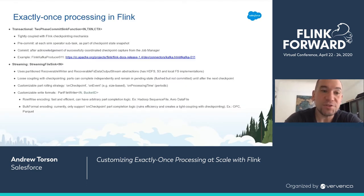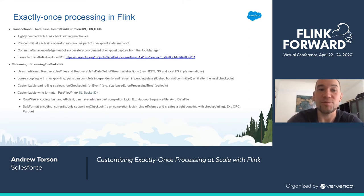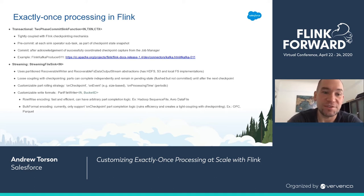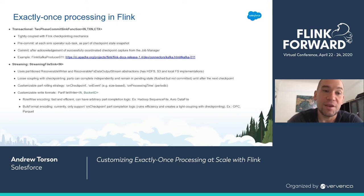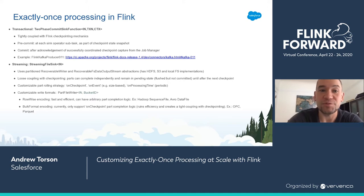There are actually two different directions to achieve that. If you want transactional support, then Flink offers what's called a two-phase commit sink function. The most well-known example is the Flink Kafka producer for Kafka versions 0.11 or higher. It relies on Flink's checkpointing mechanism and is basically doing a distributed transaction coordinated by the Flink job manager.